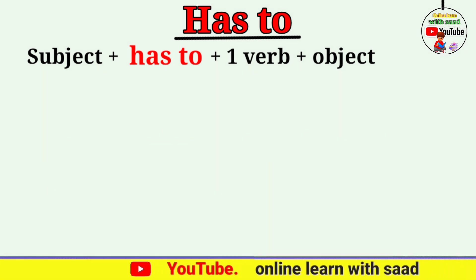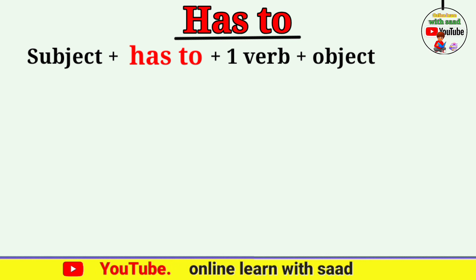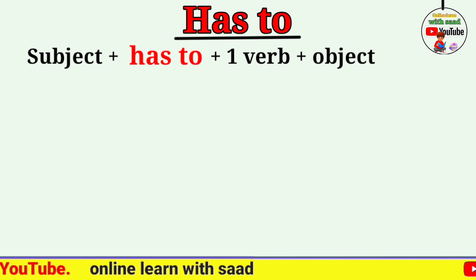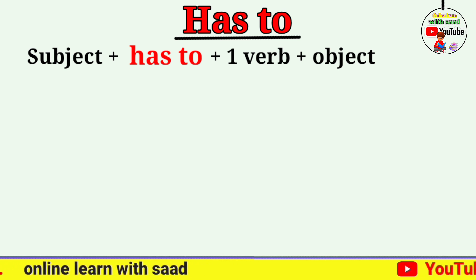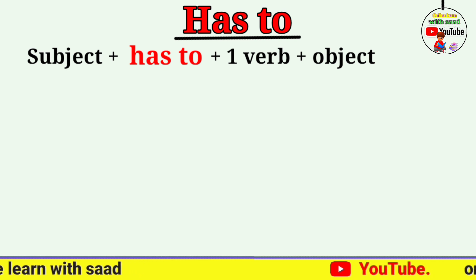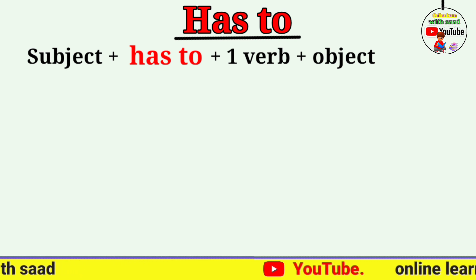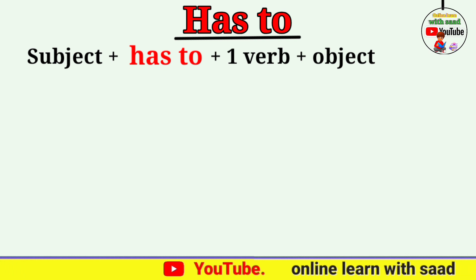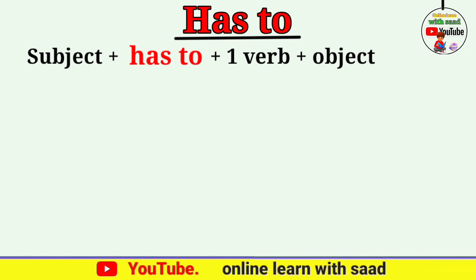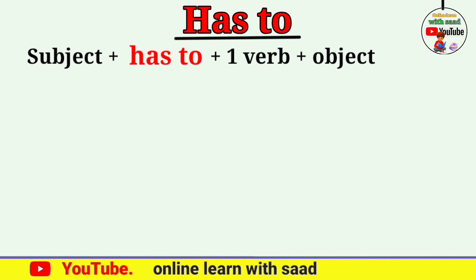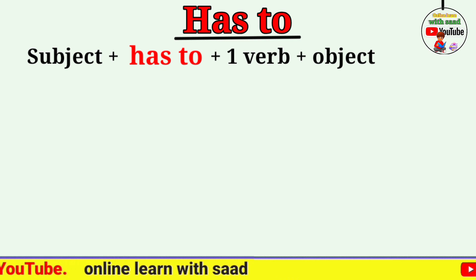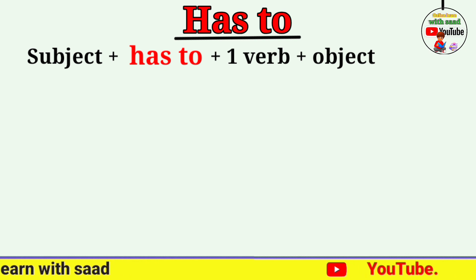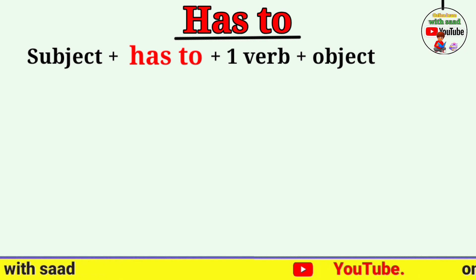Students، 'has to' کے positive sentences — I hope آپ لوگوں کی سمجھ میں آئی ہو۔ 'Have to' اور 'has to' کا بس اتنا فرق ہے: 'has to' استعمال ہوتا ہے he, she, it اور singular noun کے ساتھ، اور 'have to' استعمال ہوتا ہے I, we, you, they اور plural noun کے ساتھ۔ Definition same ہے، اردو جملوں کے آخر بھی same ہیں۔